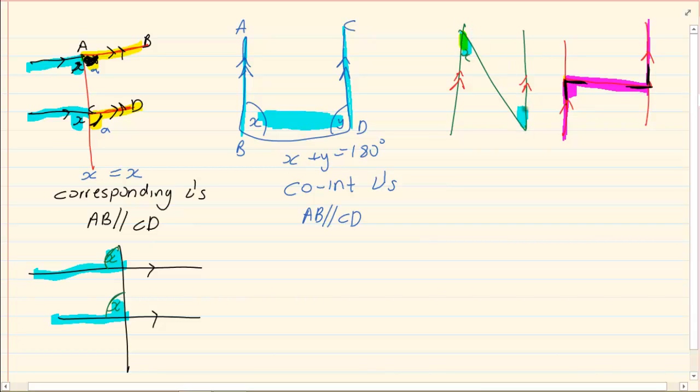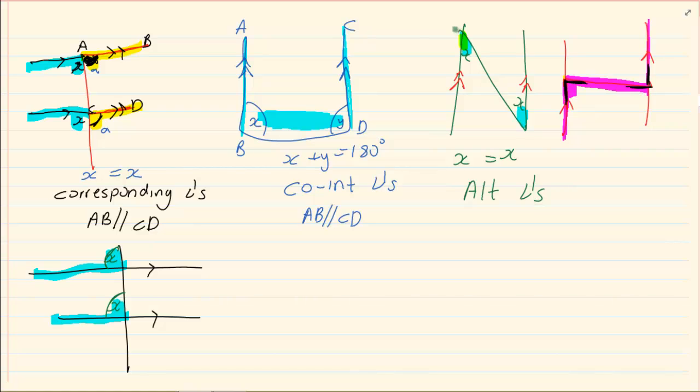And in this case, we also have that they are equal. So X is equal to X. These are called alternate angles. Remember, no way in the geometry can you say, oh it forms a U or it forms an F or it forms an N or it forms a Z. That is incorrect. No mark allocation is given for that.